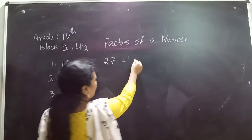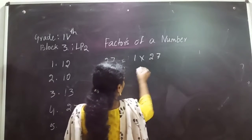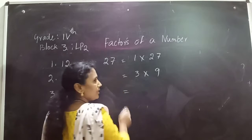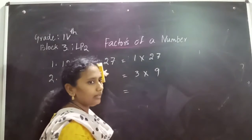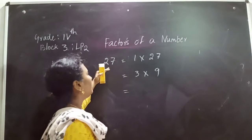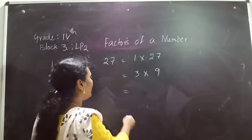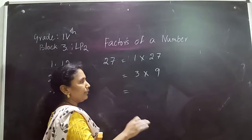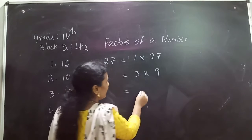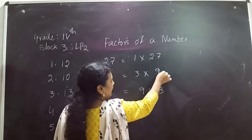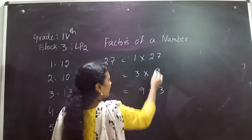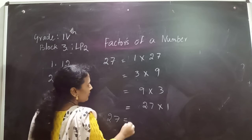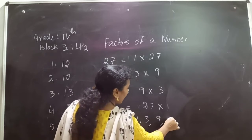We will see for the number 27. 1 times 27 is 27. Go for the table of 2 — 27 is not there. 3 nines are 27. Is 27 there in the 4th table? No. 5th table? No. 6th table? No. For 7: 7 times 3 are 21, 7 times 4 are 28, not there. For 8: 8 times 3 are 24, 8 times 4 are 32. For 9: 9 times 3 are 27. If you flip these numbers, they repeat. So the factors of 27 are 1, 3, 9, and 27.